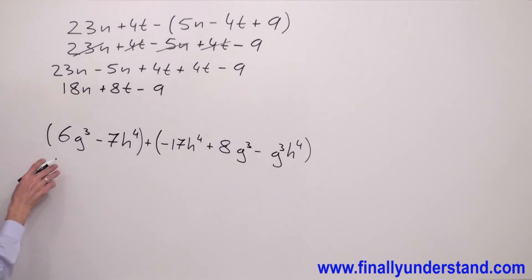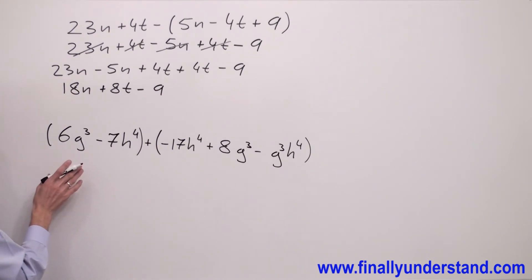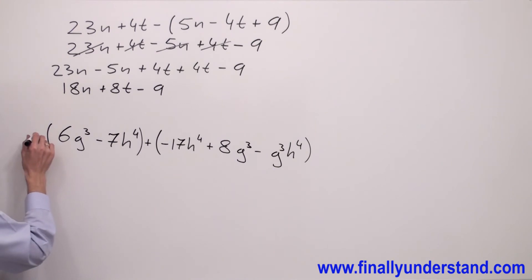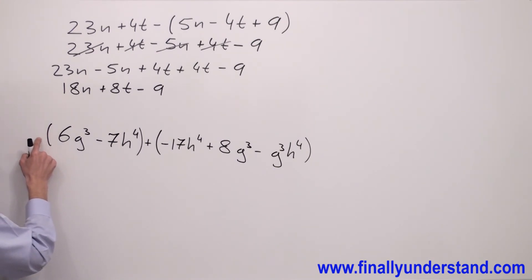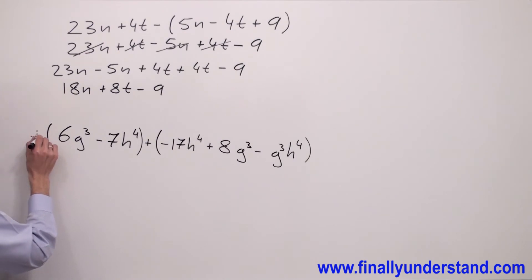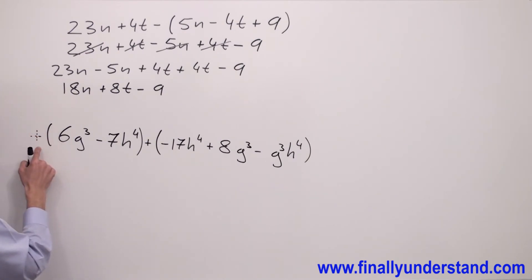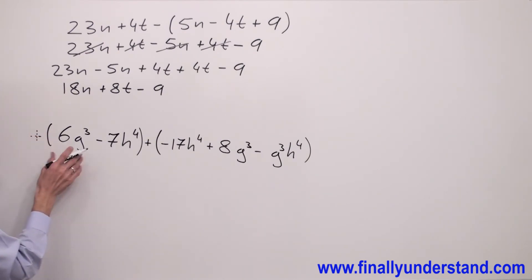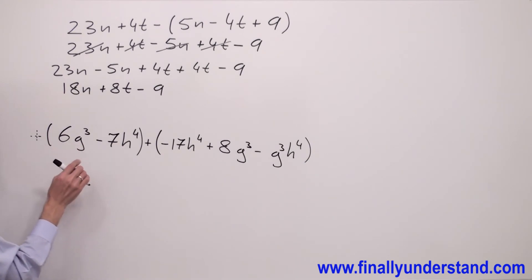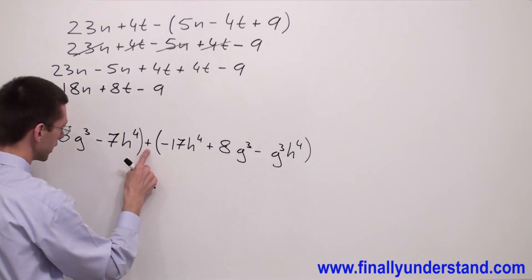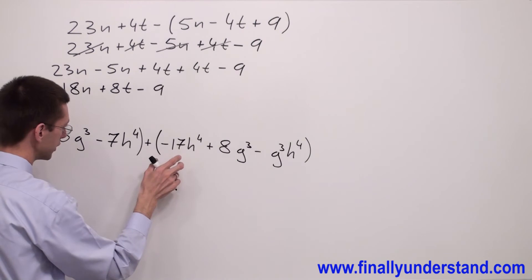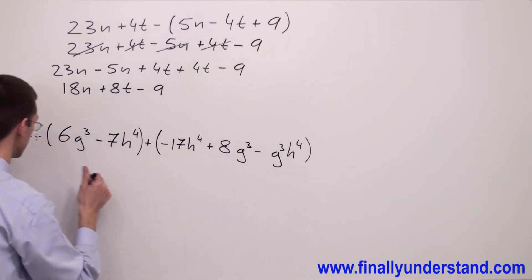Let's take a look at this example. The very first step, we have to remove the parenthesis. Anytime I do not see any sign at the front of the parenthesis, there is always a positive sign. Anytime I have a positive sign, I simply remove the parenthesis without changing any signs inside.